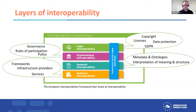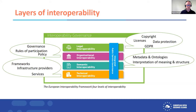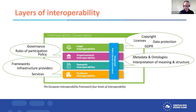For those unfamiliar with the European Interoperability Framework: it divides interoperability into four layers — legal, organizational, semantic, and technical. Legal interoperability covers licenses, copyright, data protection, and GDPR. Organizational interoperability covers policies, governance structures, and rules of participation. Today we focus on the lower two levels: semantic interoperability, which is about interpretation of meaning, metadata, and ontologies; and technical interoperability, which is about frameworks, infrastructure, and services.